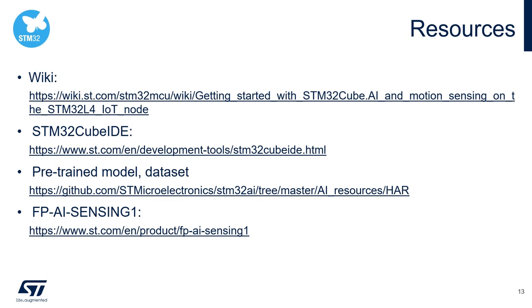Here you can find some useful links. The first is the wiki page associated with this video application note, which you can use to copy-paste the code described in the next videos. The second link is to download STM32CubeIDE. The third link contains the pre-trained Keras model that we will integrate in our application, along with the dataset used to train the model and a Python notebook to train your own model. Finally, there is a link to FP-AI-SENSING1, the STM32Cube function pack for ultra-low power IoT nodes with AI applications based on audio and motion sensing.